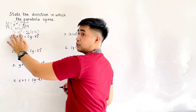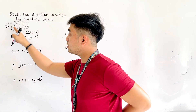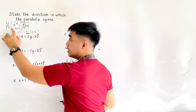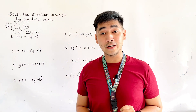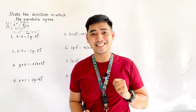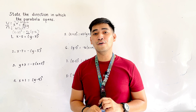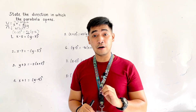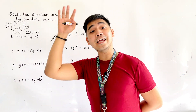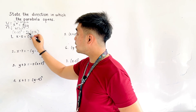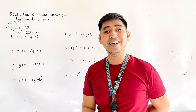If we have an equation with x minus h quantity squared — or simply x squared — the parabola can either open up or down. How do we know if it is up or down? By looking at the sign of the right side. If the right side is positive, it is opening up. If the right side is negative, it is opening downward.